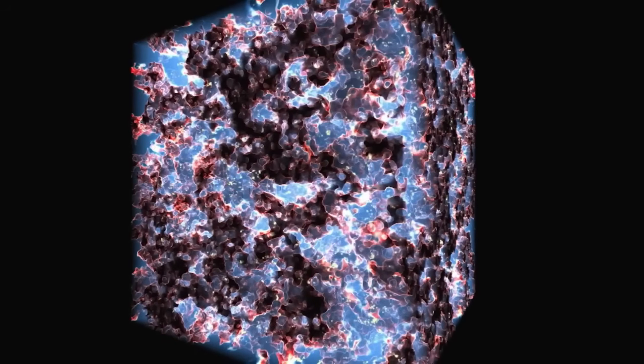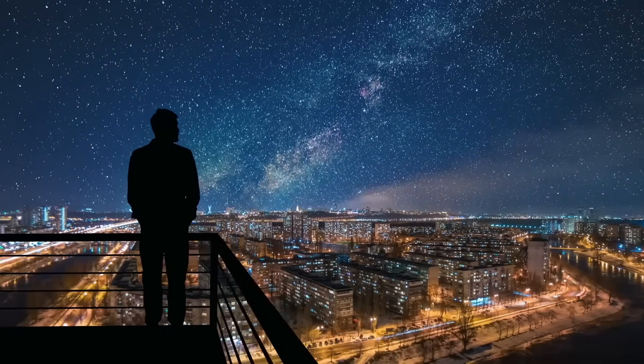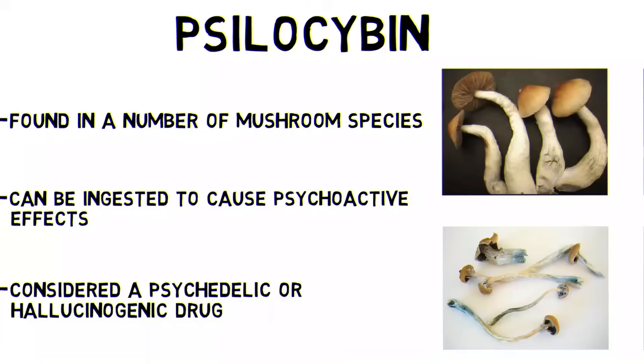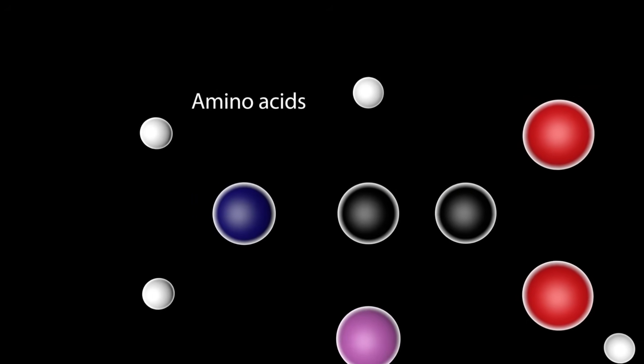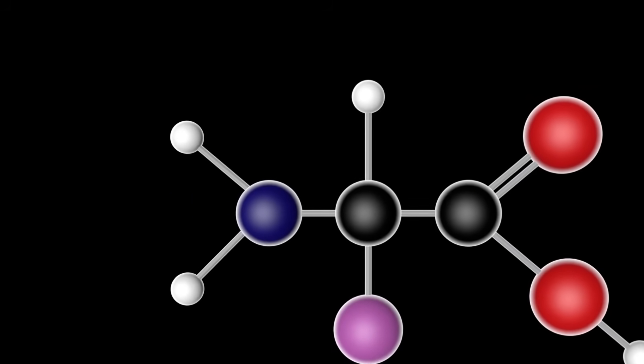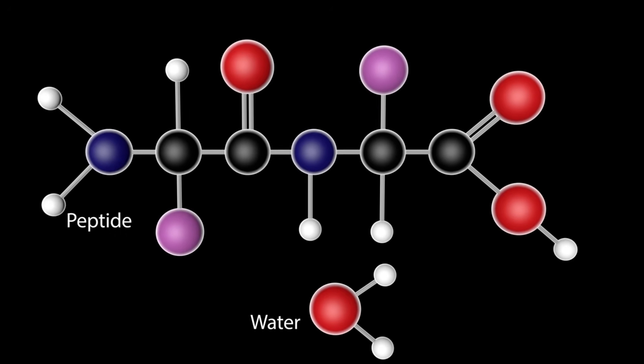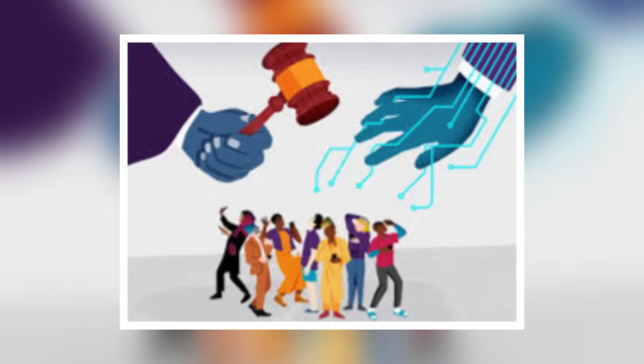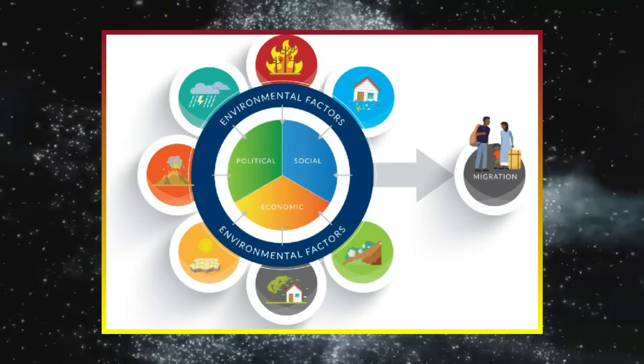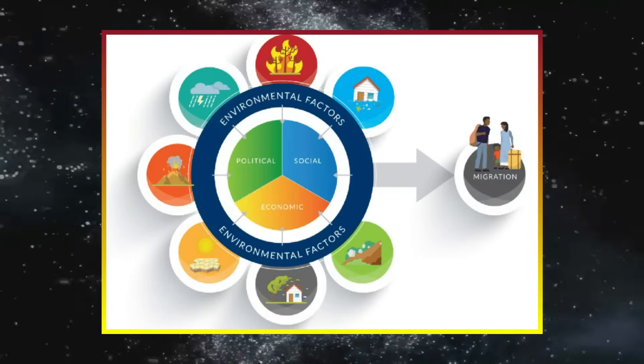If a quantum AI system can detect a common signature across thousands of individual experiences, then perhaps these Schedule I substances are not merely drugs, but tools. Keys to unlocking a hidden layer of consciousness that binds us all together. If you've made it this far, you're clearly into the deep stuff. Hit like and let us know your theory in the comments.